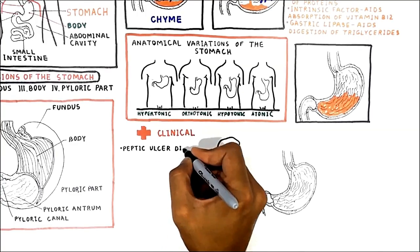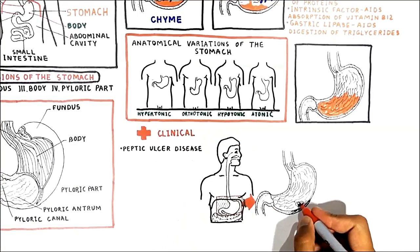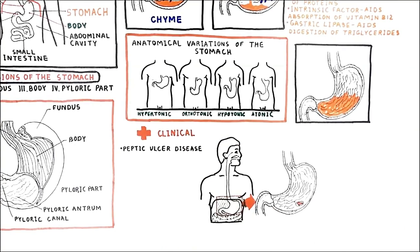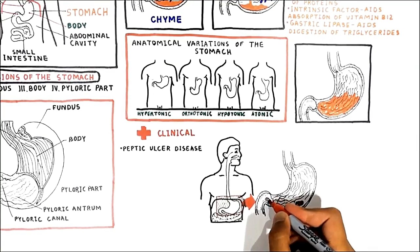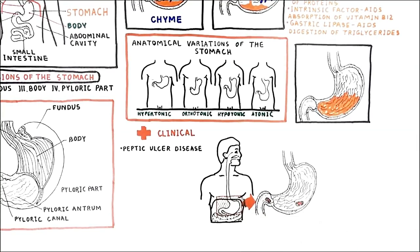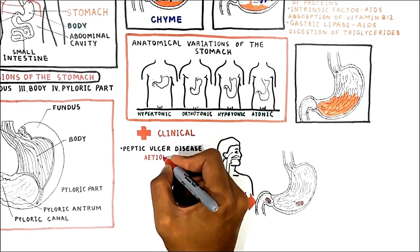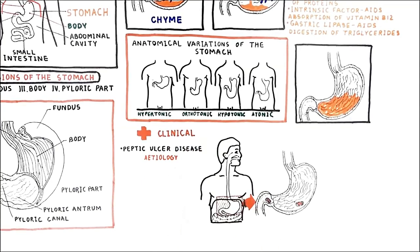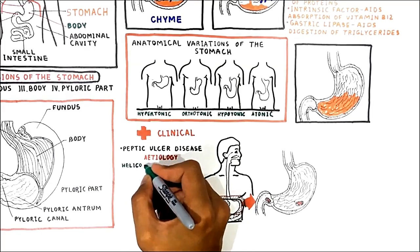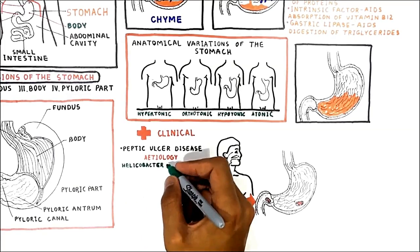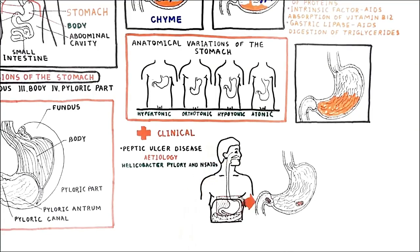Peptic ulcer disease refers to painful sores or ulcers in the lining of the stomach or first part of the small intestine called the duodenum. Common causes include the bacteria Helicobacter pylori and non-steroidal anti-inflammatory drugs.